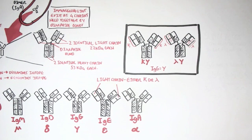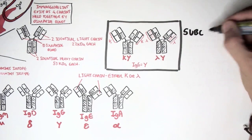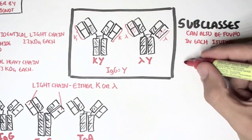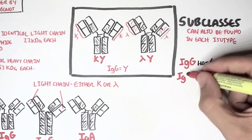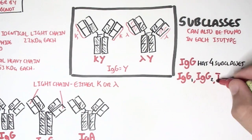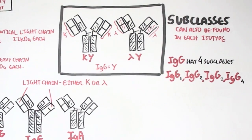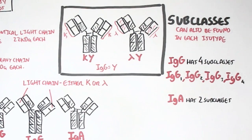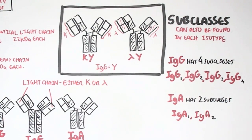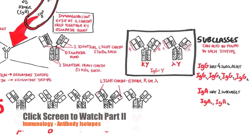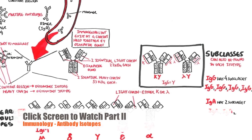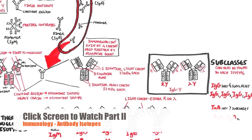To make this a bit more complex, there are subclasses that can exist within certain isotypes. For example, the isotype IgG has four subclasses: IgG1, IgG2, IgG3, and IgG4. The isotype IgA has IgA1 and IgA2. Not that you have to memorize this, but it's interesting to note. Now that we know about antibodies and immunoglobulins, let's look at these different isotypes in a lot more detail.